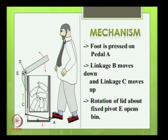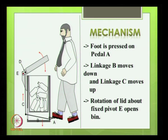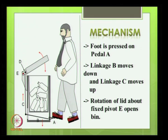A pedal mechanism consists of several linkages and pivots — either moving or fixed. Coming to the mechanism: when the foot is pressed on pedal A, the linkage B orients upward, which causes the linkage C to move up. The linkage C is connected to pivot D on the lid, and the fixed pivot E causes the lid to rotate about pivot E.